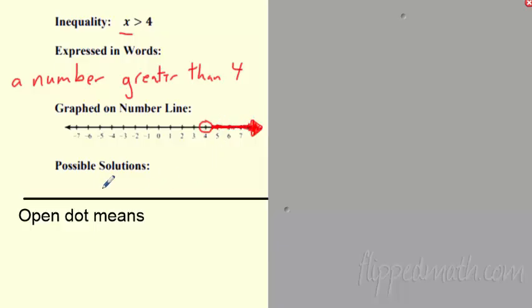There it is. I love it. So what's a couple of possible solutions? I don't know. x could be 7. There it is in my number line. Shaded. x could be 24. x could be 5.2. I'm just making these up. It's anything bigger than 4. It just can't be down here in the negatives or 2 or less than 4. Awesome.